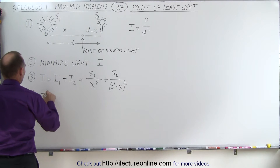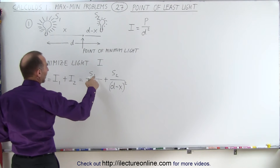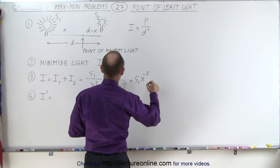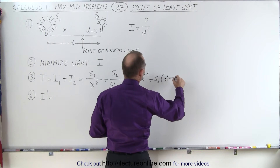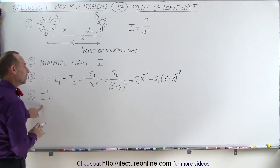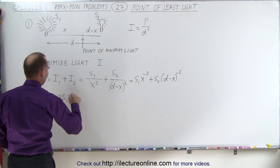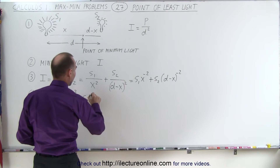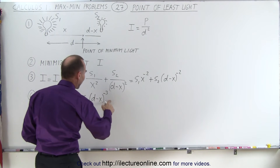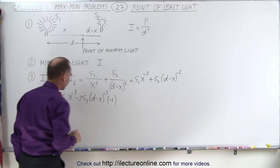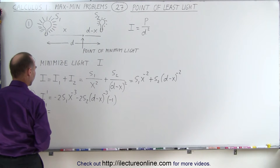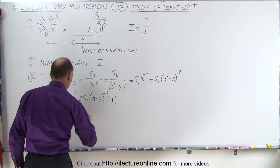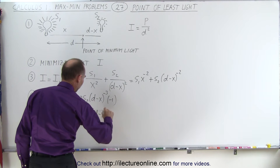Step six: we take I prime. Rewriting the equation, we have S1 times x to the negative two power, plus S2 times the quantity d minus x to the negative two power. Taking the derivative, it becomes minus two S1 times x to the minus three power, and then minus two S2 times d minus x to the negative three power, times the derivative of what's inside, which is minus one. Simplifying, the first derivative is minus two S1 over x cubed, and this minus times that minus makes it plus two S2 times d minus x to the minus three power.